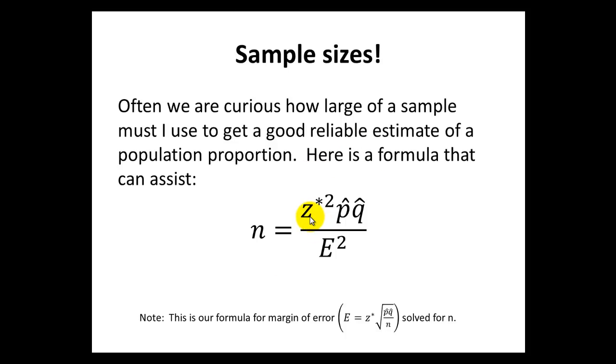n equals z star times p hat times q hat all divided by the margin of error squared. Now just a note, this formula didn't just come out of thin air. It's actually our margin of error formula solved for n.